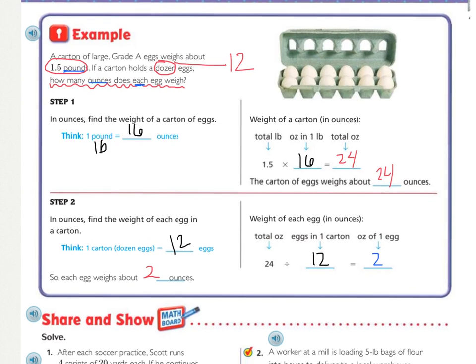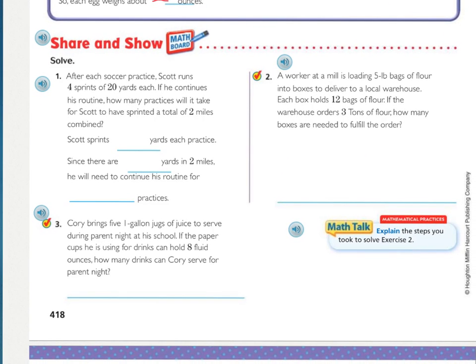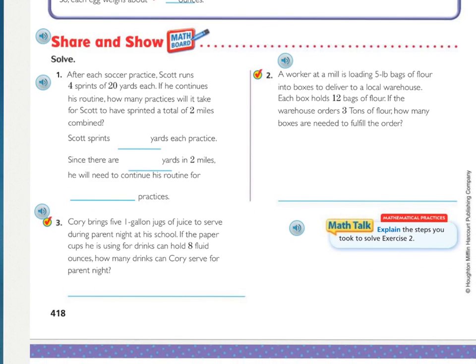So now, you have your share and show. You have number 1 gives you some work throughs and some sentence fillers, sentence frames. Sentence 2 and 3, you need to find what conversions you need to make, and make sure you have the correct label on your answer. Press pause and work.